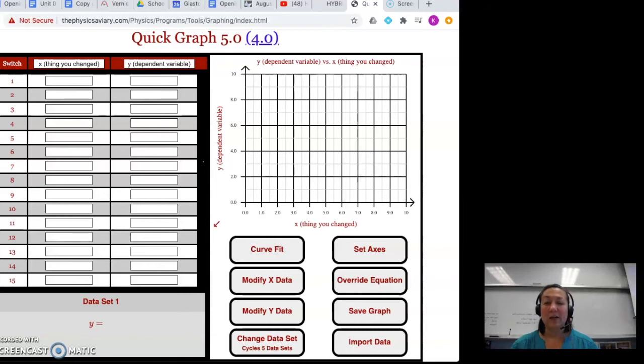So let's talk about Quick Graph. Quick Graph is not a program or an app that you're going to be downloading to your iPad. Feel free to go to Chrome or whatever browser you're using and type in the physics aviary, and you're going to go to Quick Graph 5. One of the reasons we like Quick Graph 5 is because you can put in your titles under X and Y, your independent and dependent variables. And you can do many data sets at a time. So I'm going to enter a data set.